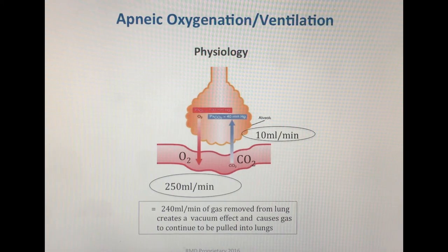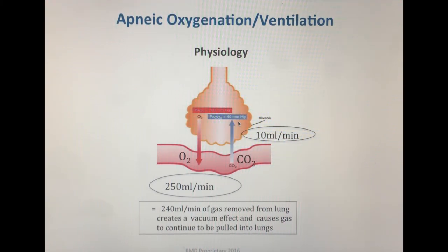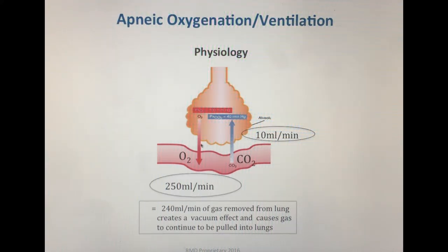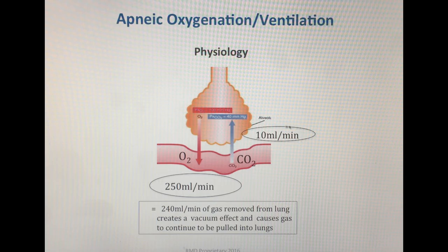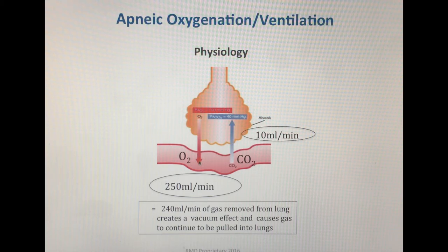Apneic oxygenation and apneic ventilation is the process of continuously flowing oxygen into the patient's lungs even when they're not breathing. If you have a continuous flow of oxygen going into the patient's lungs, the lungs stay open — i.e., the alveoli stay open. Oxygen can diffuse into the blood at a rate of 250 mLs per minute. Since the alveoli are open, carbon dioxide can move from the blood into the alveoli, but only at a rate of about 10 mLs per minute. This differential of 240 mLs per minute creates a vacuum-like effect that continuously pulls oxygen into the blood.